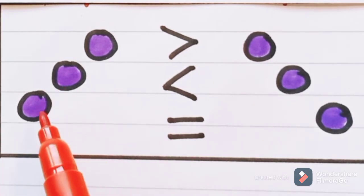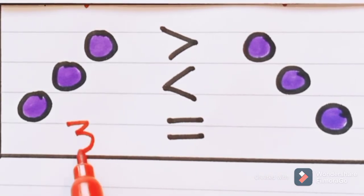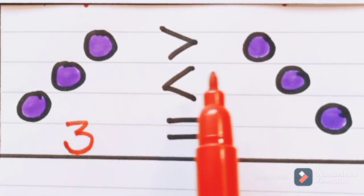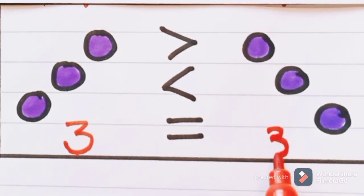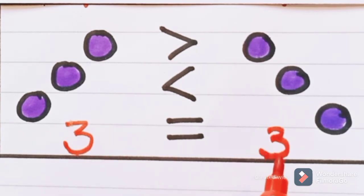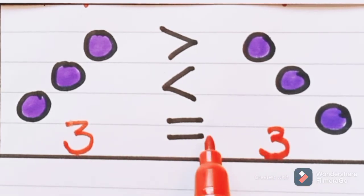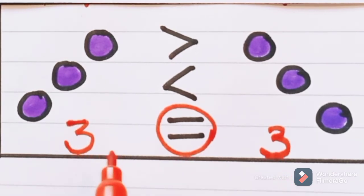Look at here children. How many circles do we have? One, two, three. And how many circles here? One, two, three — here also three circles. Are these same numbers or different numbers? These are same numbers only. For same numbers, which symbol will we use? For same numbers, we will use equal to symbol. Three is equal to three.